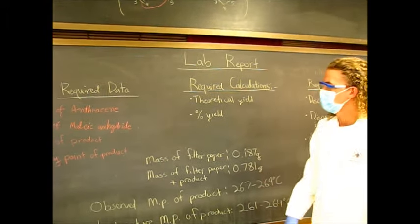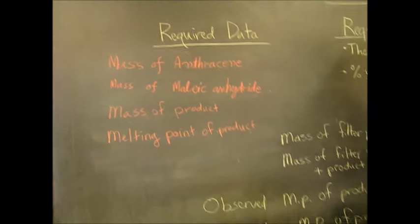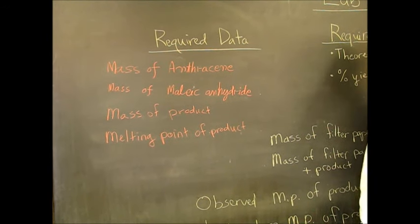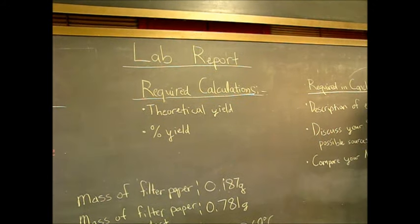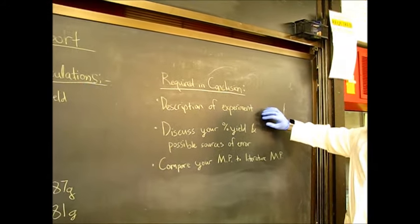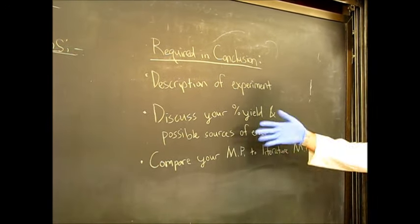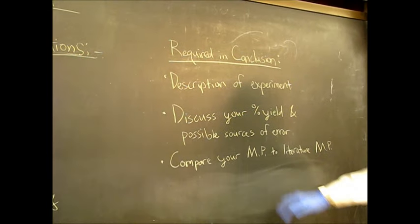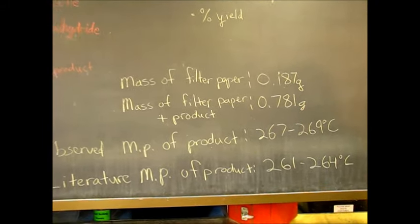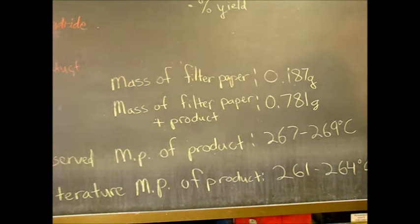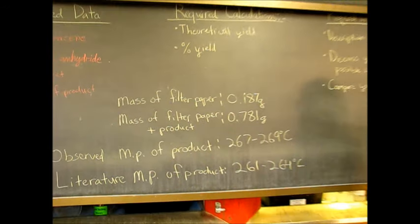So whenever you start writing your lab report for this lab, make sure you have all of the required data: mass of anthracene, mass of maleic anhydride, mass of product, and then melting point of the product. These three things Dr. Astoby will give you in a file. This one will get shared in the video. Also, don't forget the calculations and theory of the percent yield. And then in your conclusion, make sure you talk about the experiment in general. Discuss the percent yield and what it means about the success of your reaction. And then possible sources of error or explain why your percent yield is low or high. And then finally just compare your melting point to your literature melting point. So for us, we got the filter paper weight 0.178 grams. Filter paper and the product weight 0.781. And then we got melting point 267 and 269. And the literature melting point is 261 and 264. So it's always a little bit higher. But we're relatively close.